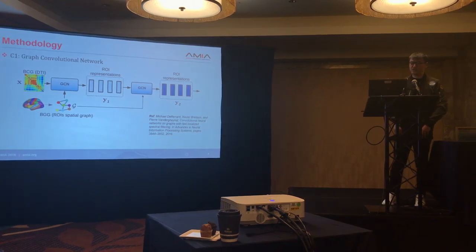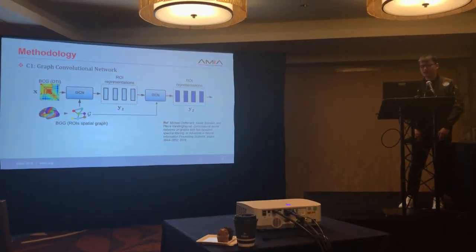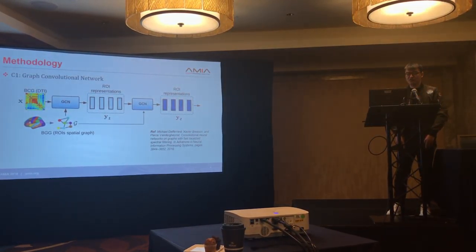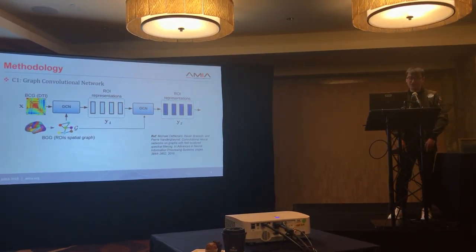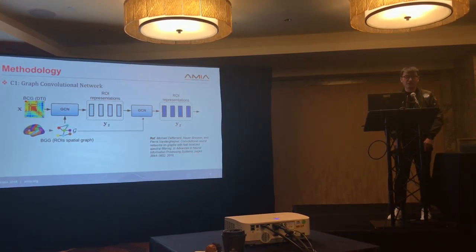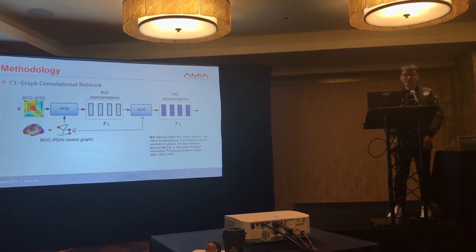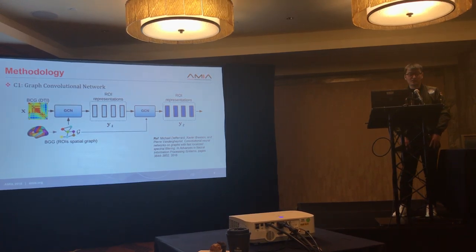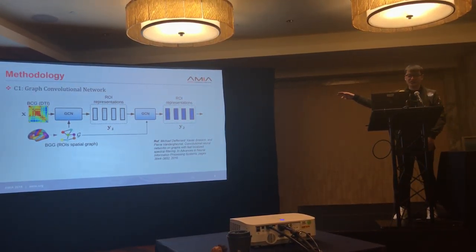This is the detailed implementation of the first component, the Graph Convolution Network. You have the BCG from DTI data and the BGG from MRI data, and you include them together into the GCN. After the first layer, you get representations of the regions of interest. Those representations are fed into the next layer, and so on, layer by layer, until you get the final matrix representing the BCG. This is illustrated as a two-layer GCN.